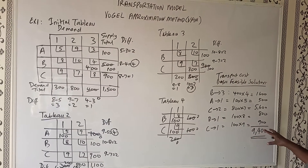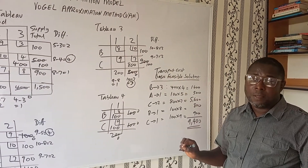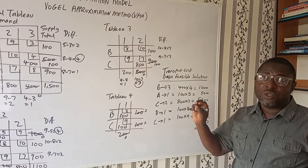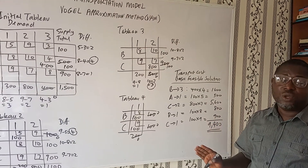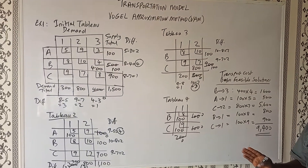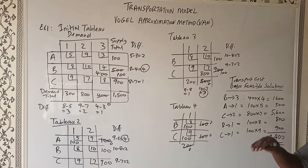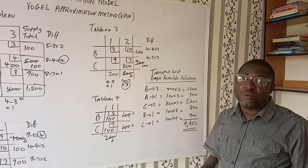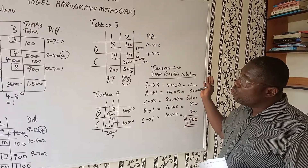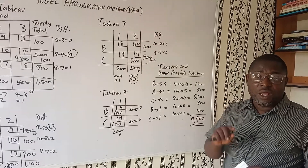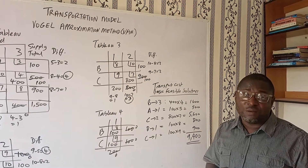Now I want you to solve this problem: go and compare the answer we got for this solution against Example 1 for the North West Corner Method and against Example 1 for the Least Cost Method. Of these three, which one will incur the least cost? Place your answer in the comment section. Thank you very much for being patient watching this video — go over it again until you gain mastery. Look out for another video and example on the Vogel Approximation Method.